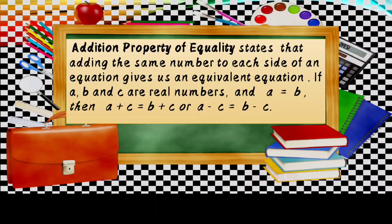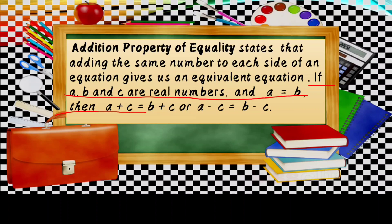Let us review the properties of equality that will help us in this lesson. The first one is the Addition Property of Equality, which states that adding the same number to each side of an equation gives us an equivalent equation. If A, B, and C are real numbers and A equals B, then A plus C equals B plus C, or A minus C equals B minus C.